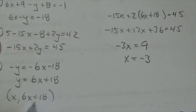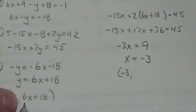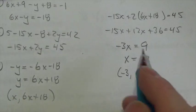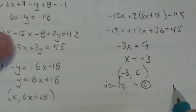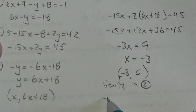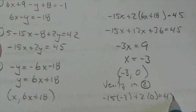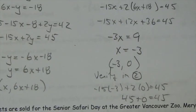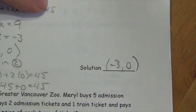I got this from equation one, so these are the coordinates: x is negative 3, and y is 6 times negative 3 plus 18 — that's negative 18 plus 18, which is 0. I verify in equation two: negative 15 times negative 3 plus 2 times 0 equals 45. Is 45 plus 0 equal to 45? Yes. So the solution to our system is the point (-3, 0).